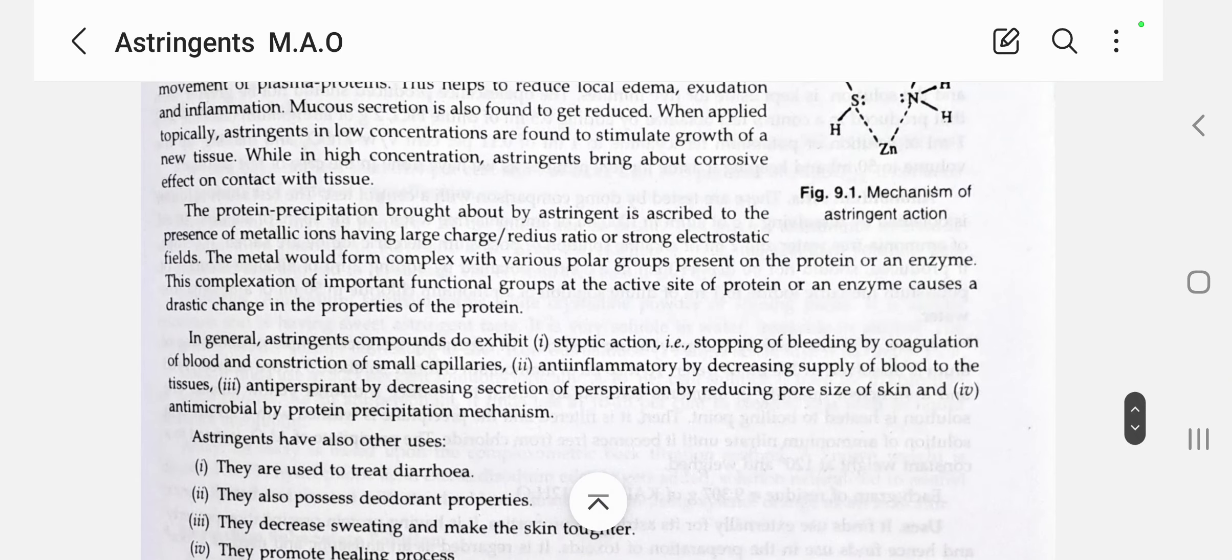What are the uses of astringents? Astringent compounds exhibit styptic action, which is the stopping of bleeding by coagulation of blood and constriction of small capillaries. Astringents are mainly used to apply on chopped or cut wounds, thereby stopping the bleeding by coagulation of blood and constriction of small capillaries.